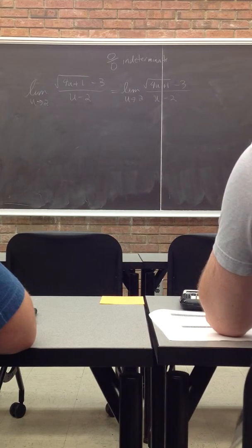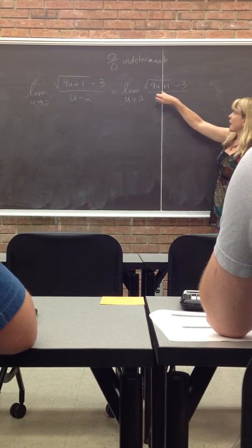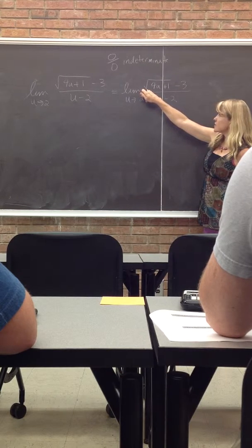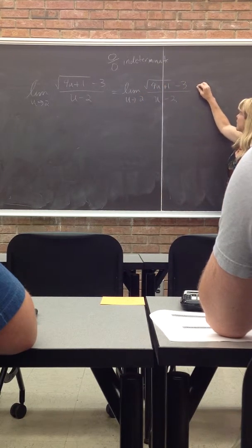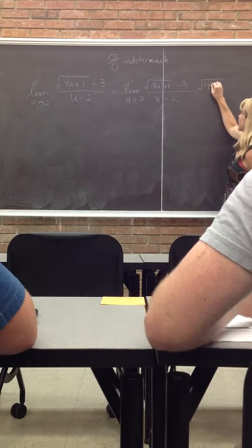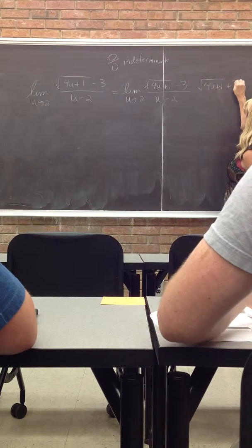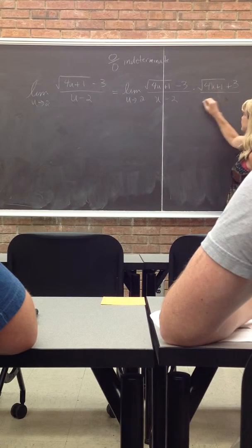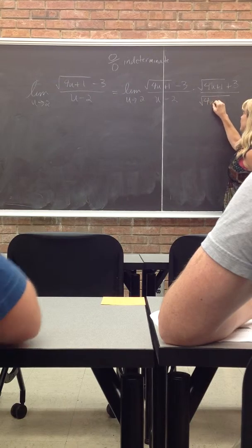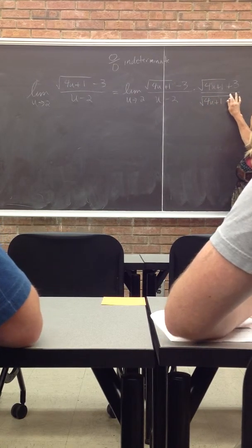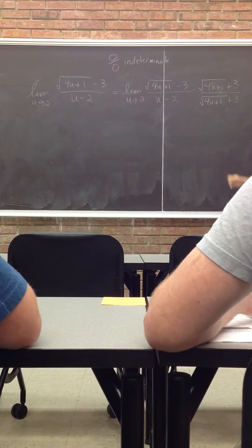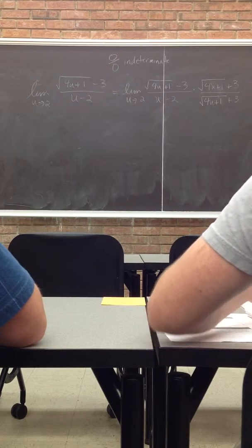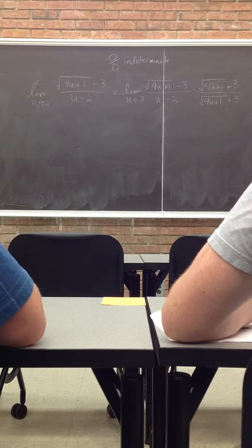But the trick here is I want to try to cancel the square root. So I'm going to do that by multiplying by the conjugate. And in order to keep it equal to the function I started with, I'm going to multiply the top and the bottom by the same thing.